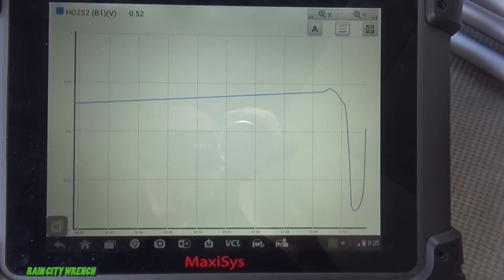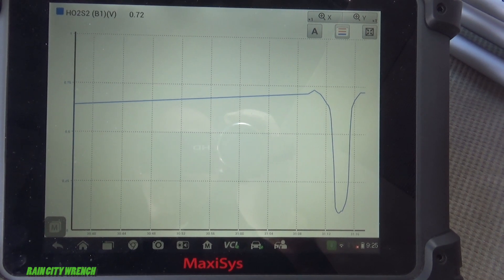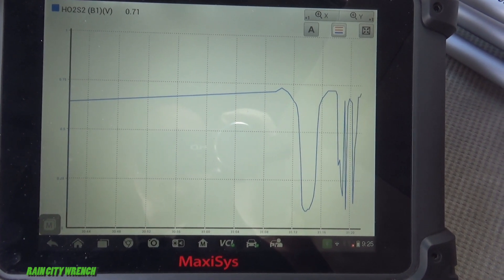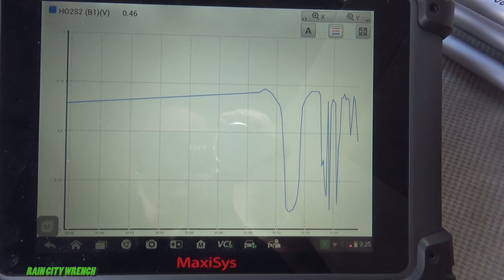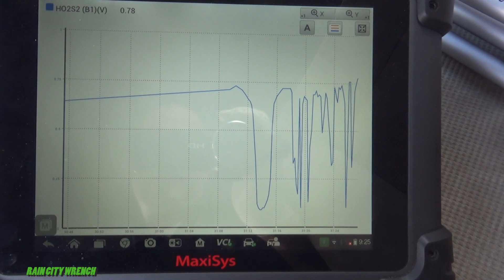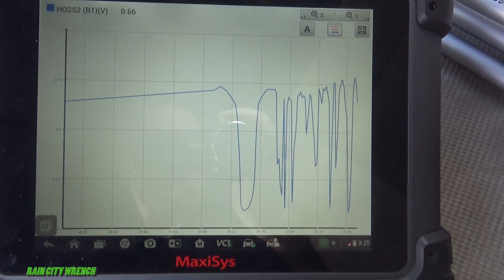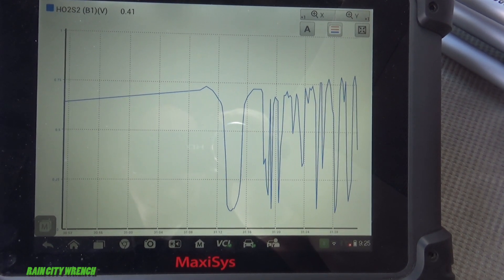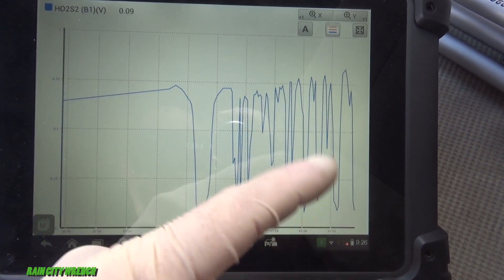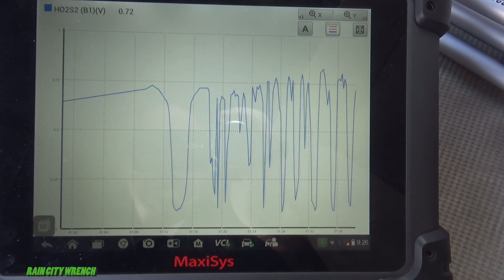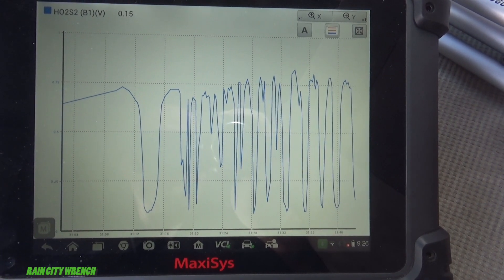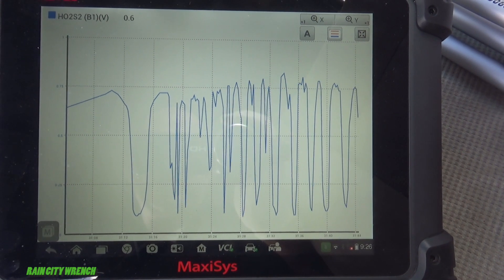We're back here now on the downstream oxygen sensor. Let's go ahead and run it at a cruise now, see what it looks like. It should also stay fixed voltage, flatline voltage, somewhere in the 700 millivolt range. You can see it's switching really fast, which it should not do. This catalytic converter is stone cold dead.